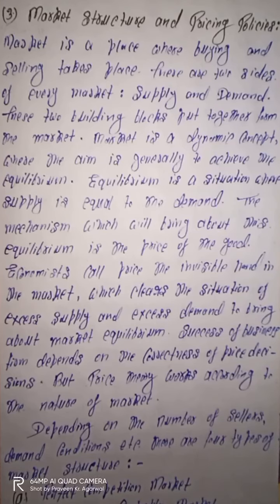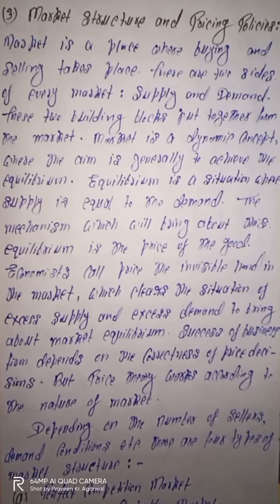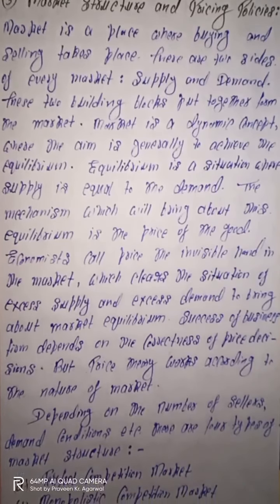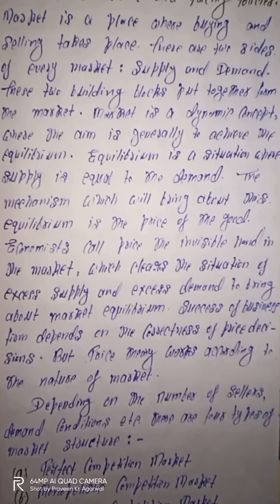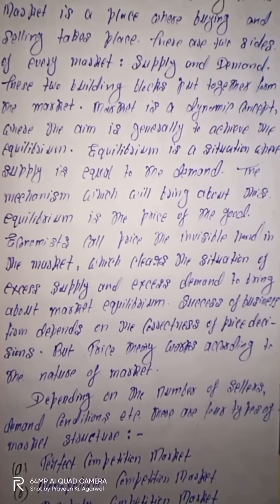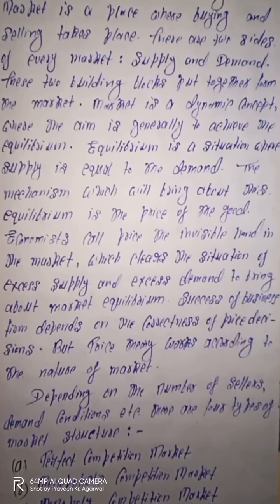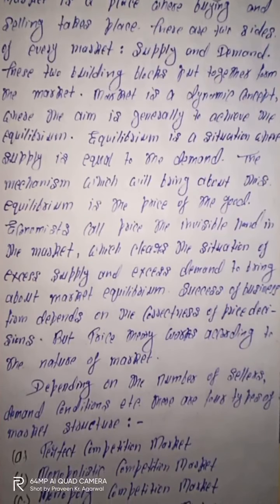अब यह बात आती है कि equilibrium का मतलब क्या होता है? Equilibrium का मतलब होता है जब market में supply side और demand side दोनों equal होते हैं तो हम equilibrium की बात करते हैं। इस equilibrium position के reference में हमें goods के उस particular price के बारे में पता चल जाता है जिस पर buying and selling complete होगी। Market में अगर demand ज़्यादा है supply कम है तो goods के price ज़्यादा होंगे, लेकिन अगर demand कम है और supply ज़्यादा है तो goods के price कम होंगे।